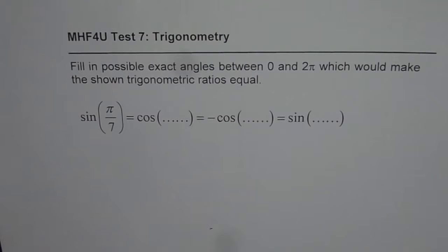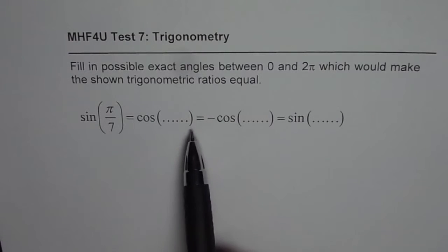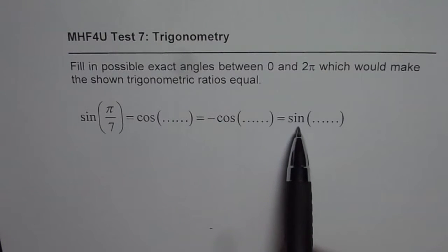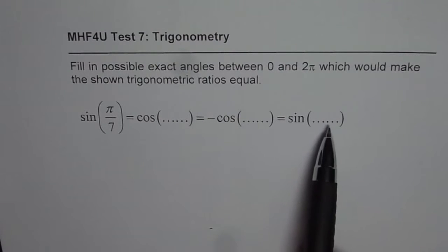The question is, fill in possible exact angles between 0 and 2π which would make the shown trigonometric ratios equal. So we have sin(π/7) equals cos of something, which is equal to minus cos of something else, which should be equal to sin of something. So you are supposed to fill in these.